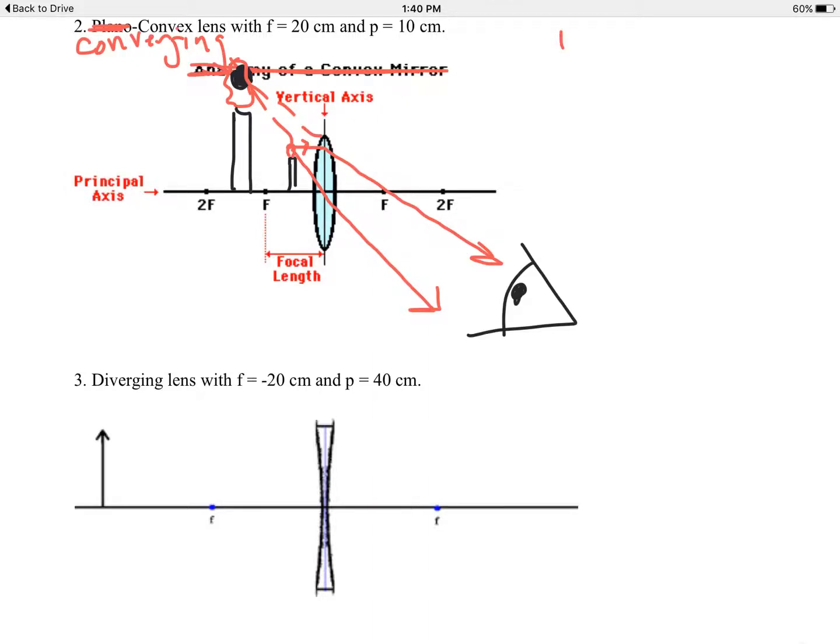We start with the basic lens equation. Once again, 1 over F equals 1 over P plus 1 over Q. So we have 1 over 20 equals 1 over 10 plus 1 over Q. Punching into our calculator, Q equals negative 20 centimeters.